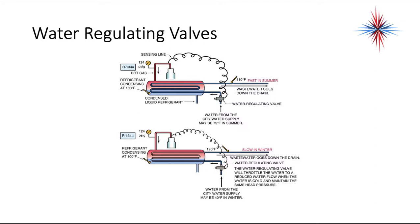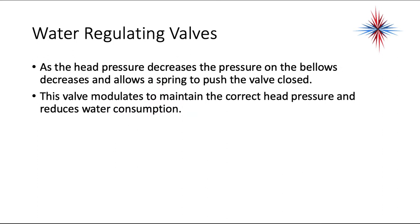Here is an example of a water regulating valve on a condenser. The refrigerant is condensing at 100 degrees with water entering at 110 degrees — a 10-degree difference. Flow rate varies depending on water temperatures, pressures, and refrigerant pressures. As head pressure decreases, pressure on the bellows decreases and allows the spring to push the valve closed. The valve modulates to maintain correct head pressure and reduce water consumption on this open-loop system.